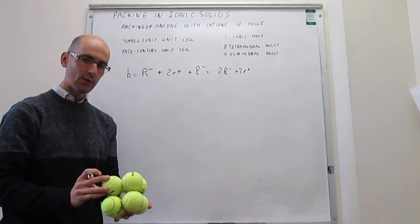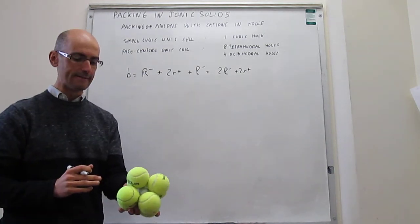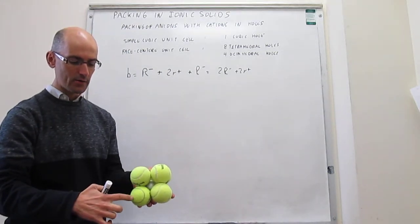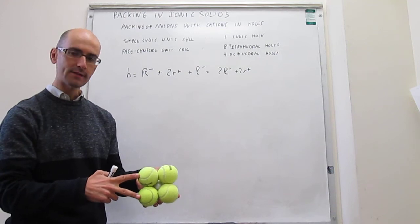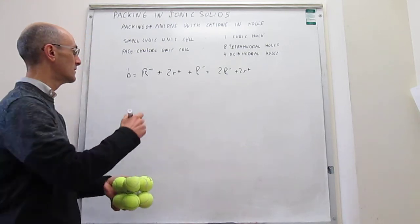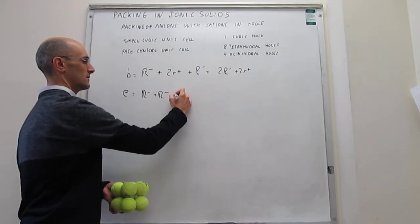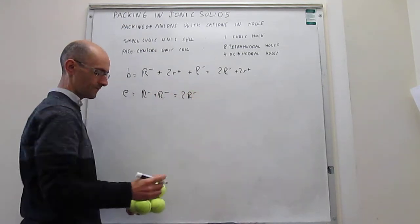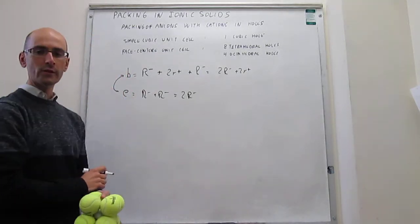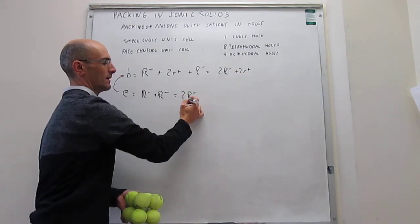Now the question is how is this related to other geometric features in this simple cubic unit cell? Notice that if we look at an edge right here, the length of the edge is simply going to be twice the radius of one of these anions. So we know that the edge is just going to be r⁻ + r⁻, which is equal to 2r⁻. So then the question is, how are these two things related? If we know how to relate those two, then we will be able to find a relationship between the radius of the cation and the radius of the anion.